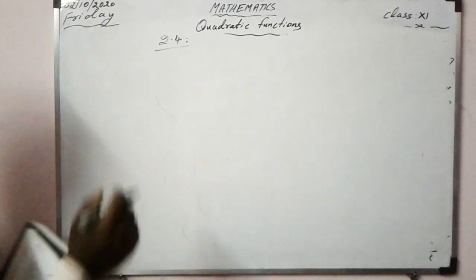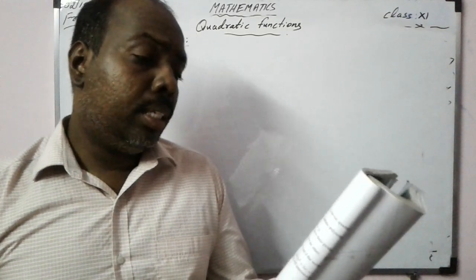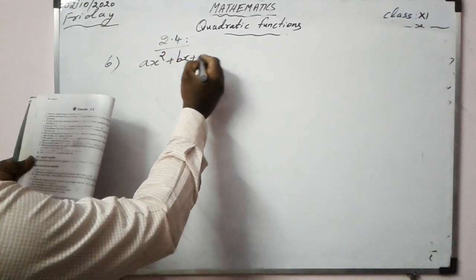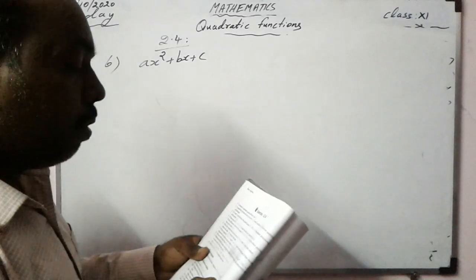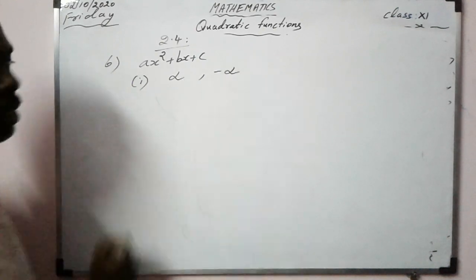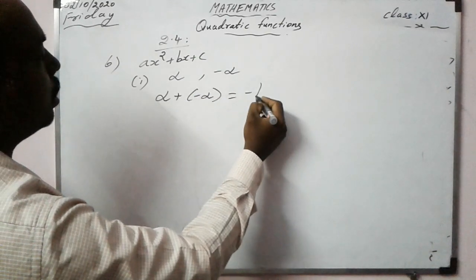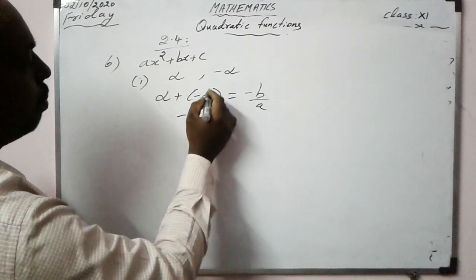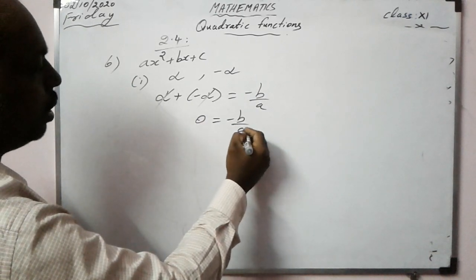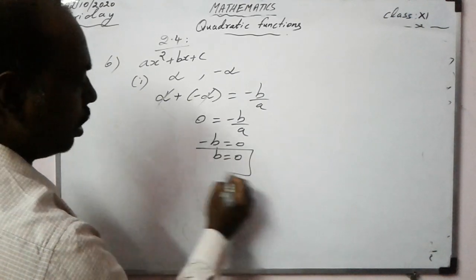Sixth question: Find the condition that one root of ax²+bx+c = 0 may be the negative of the other. Let the roots be alpha and -alpha. Sum: alpha + (-alpha) = -b/a, so 0 = -b/a, giving b = 0. That is the condition.